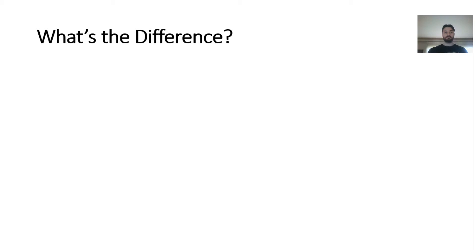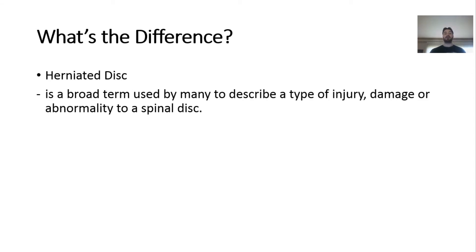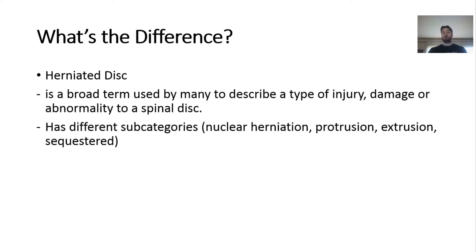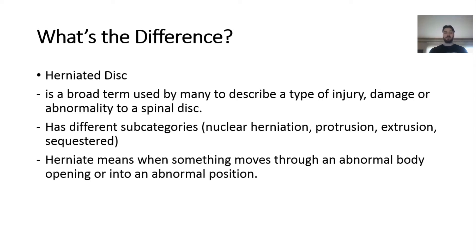So firstly, what's the difference? Let's look at a herniated disc. A herniated disc is a broad term that is used by many people to describe a type of injury, damage, or abnormality to a spinal disc. It has different subcategories — nuclear herniation, disc protrusion, extrusion, and sequestered. The key thing is a herniated disc is a very broad term used to describe different types of herniations within a disc, whether that's a contained herniation or a non-contained herniation, or a sequestered disc.